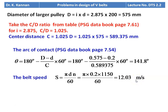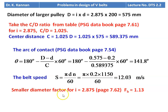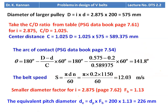Belt speed S = πDn/60 = π × 0.2 × 1150 / 60 = 12.03 m/s. Small diameter factor for i = 2.875, from page 7.62, Fb = 1.13. Equivalent pitch diameter De = Dp × Fb = 200 × 1.13 = 226 mm.